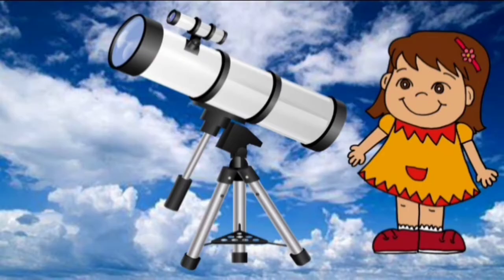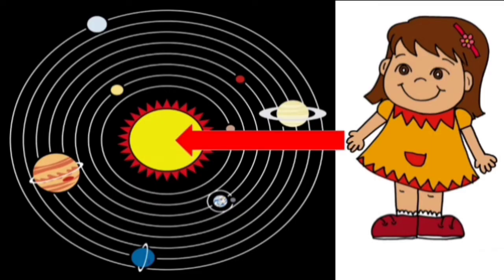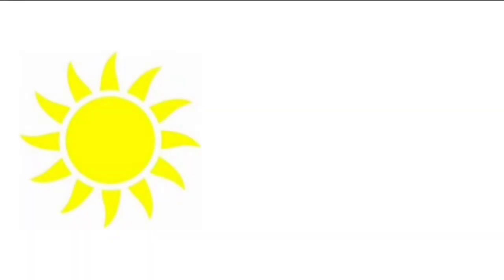Through a telescope you can see the solar system and in the middle of the solar system you will see the Sun. We draw the Sun like this, but when we look at the Sun through a telescope it looks like this.